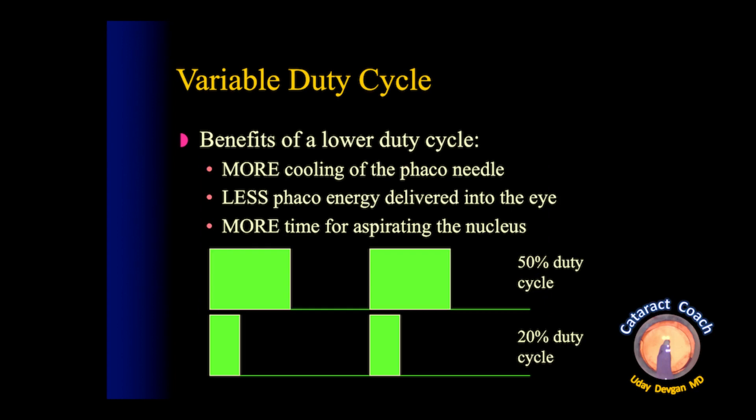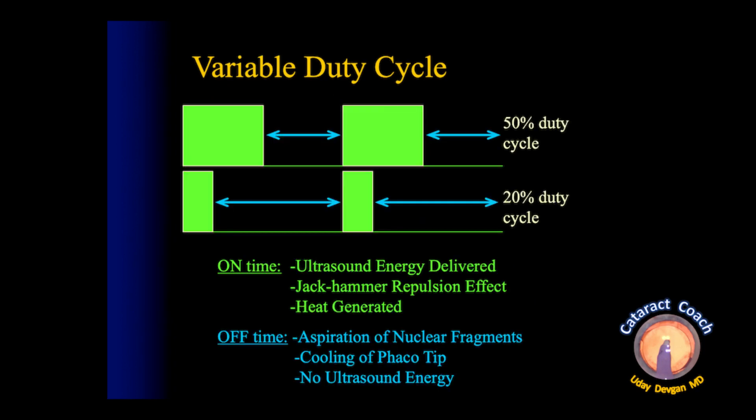The variable duty cycle offers several benefits: more cooling of the phaco needle, less phaco energy delivered, and more time to aspirate the nucleus. During the on times, you give the energy — the jackhammer effect and heat generation. During the off time, there is aspiration and cooling of the phaco tip.